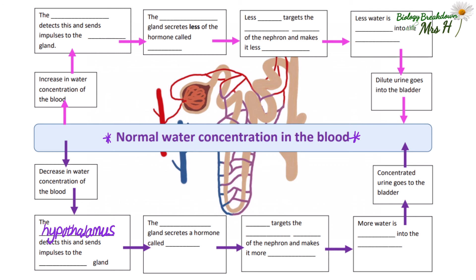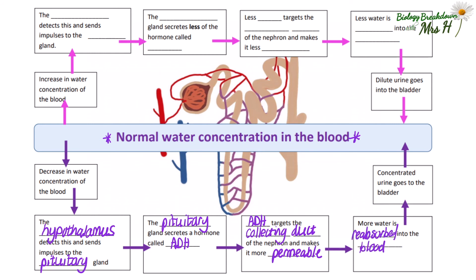These are actually called osmoreceptors. The hypothalamus detects the decrease in water concentration in the blood and sends an impulse to the pituitary gland. The pituitary gland secretes the hormone ADH. ADH targets the collecting duct of the nephron and makes it more permeable. More water is reabsorbed into the blood by osmosis, leaving concentrated urine going to the bladder — a very dark colour, as there's not much water in the urine. The urine also contains the waste product urea that we want to get rid of.